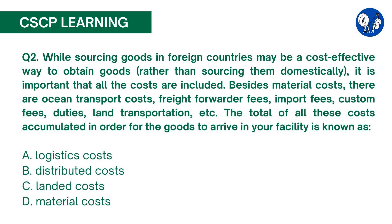Question number 2. While sourcing goods in foreign countries may be a cost-effective way to obtain goods rather than sourcing them domestically, it is important that all costs are included. Besides material costs, there are ocean transport costs, freight forwarder fees, import fees, custom fees, duties, land transportation, etc. The total of all these costs accumulated in order for the goods to arrive in your facility is known as: A. Logistics costs, B. Distributed costs, C. Landed costs, D. Material costs.